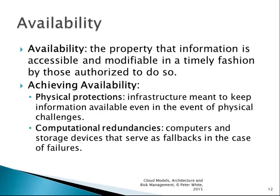In our triad we also want availability — the characteristic that says information is accessible and modifiable in a timely fashion by those authorized to do so. You do this by giving infrastructure that makes things available even in the face of physical challenges, or you have redundancies — computers and storage devices that serve as fallbacks. This includes high availability across a load balancer so that if one goes down, the other is still available, and redundant compute resources that serve as a fallback in the case of a particular failure.